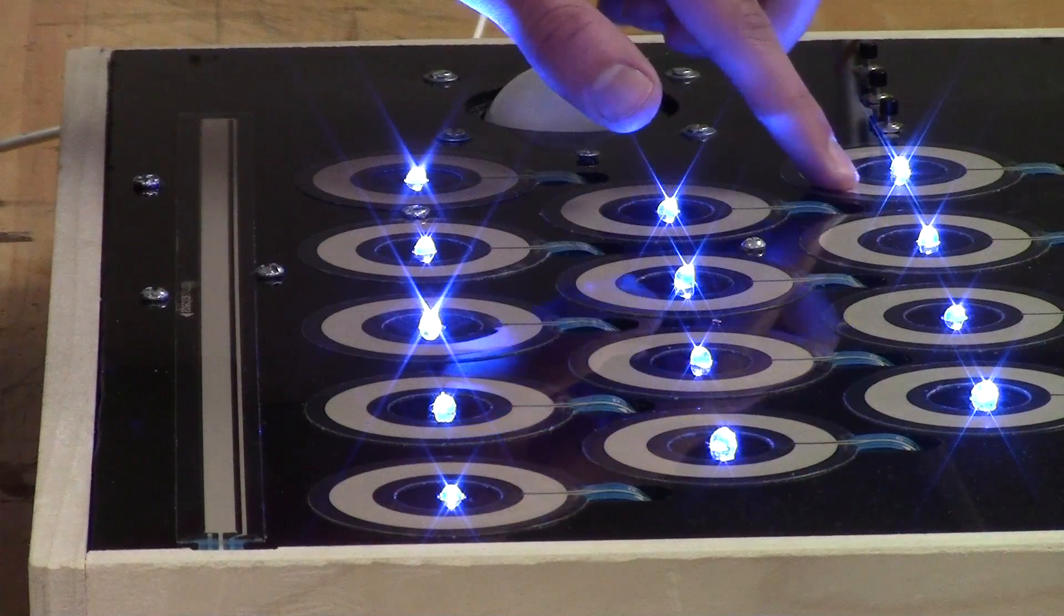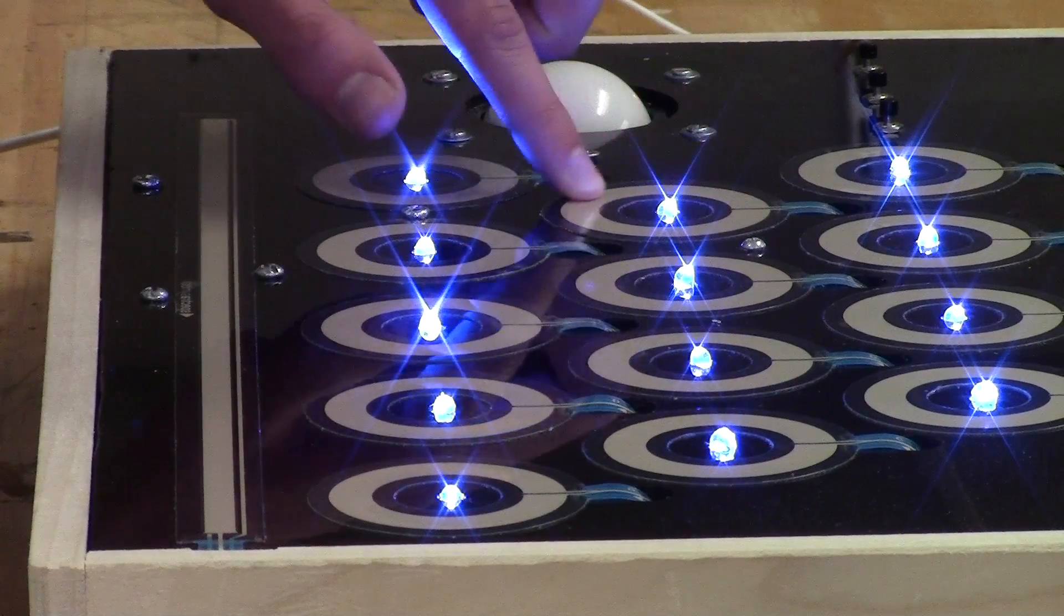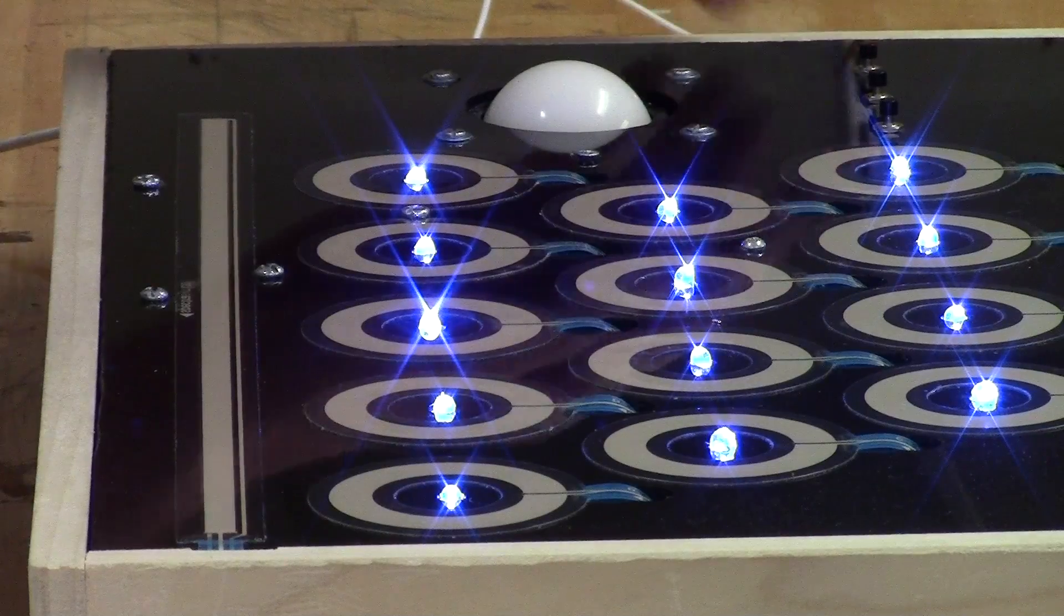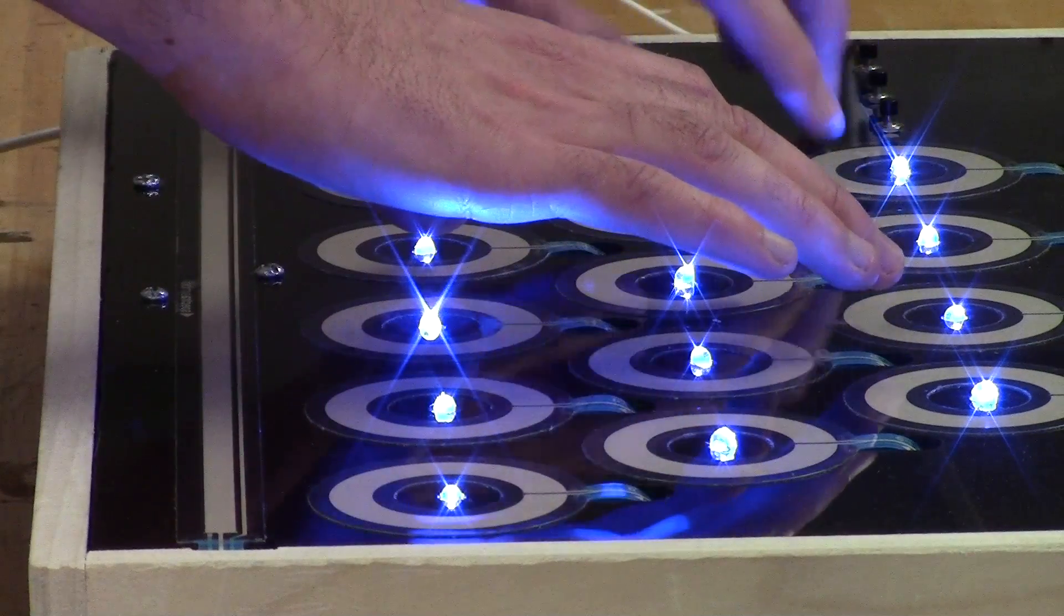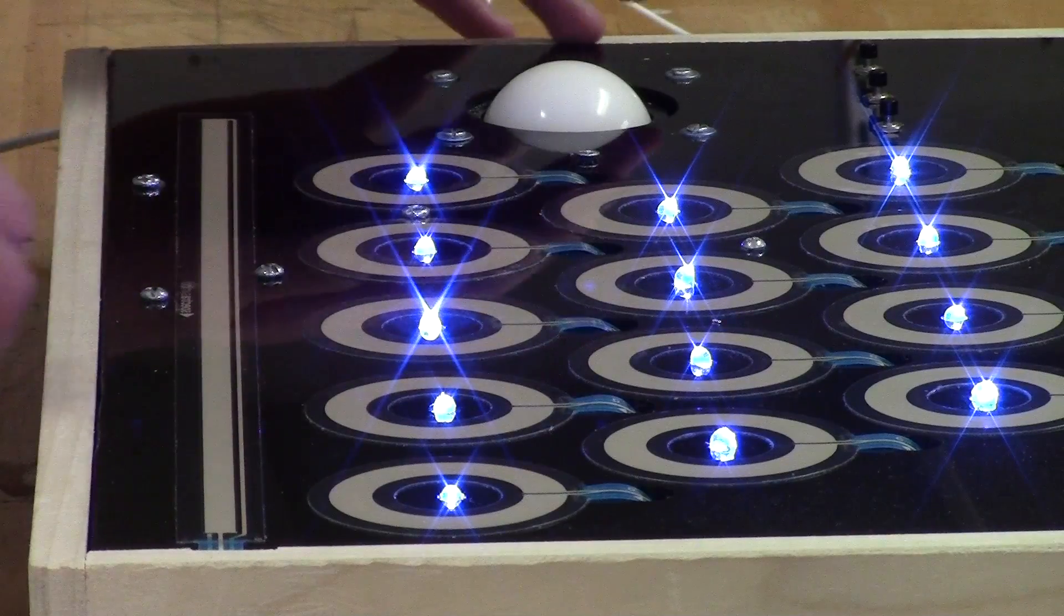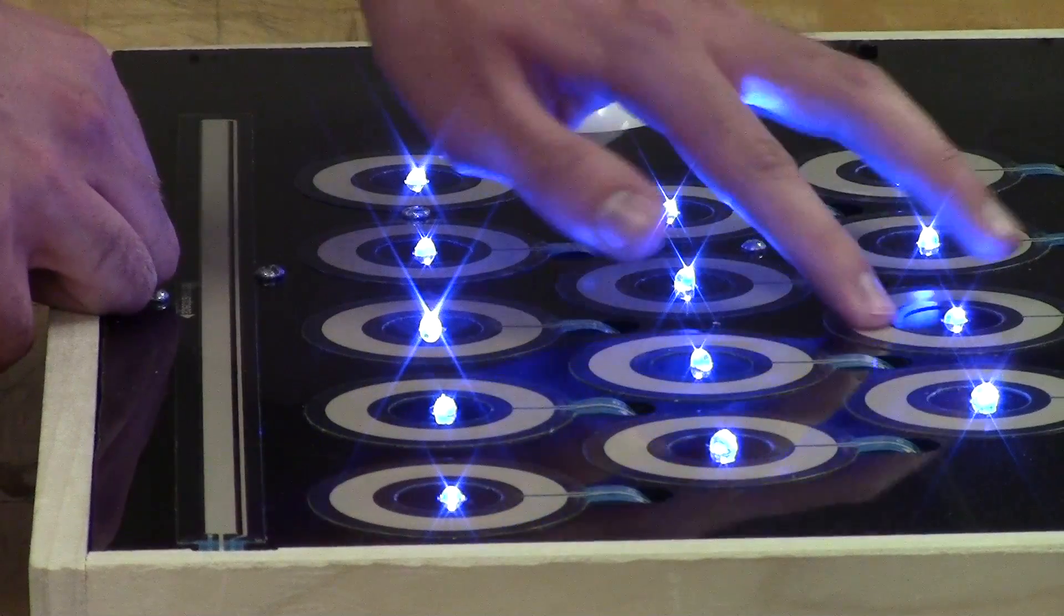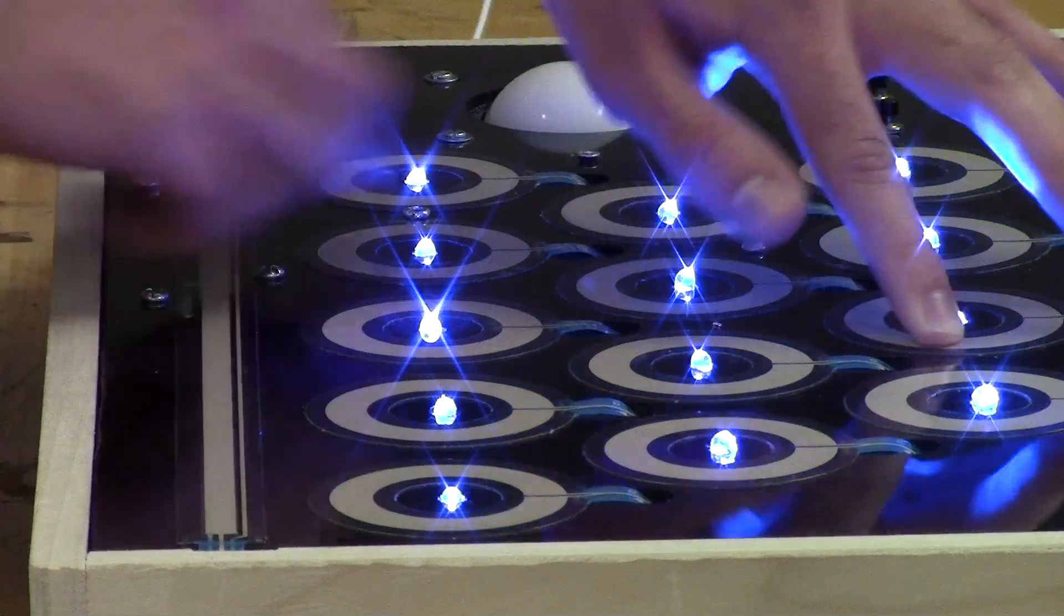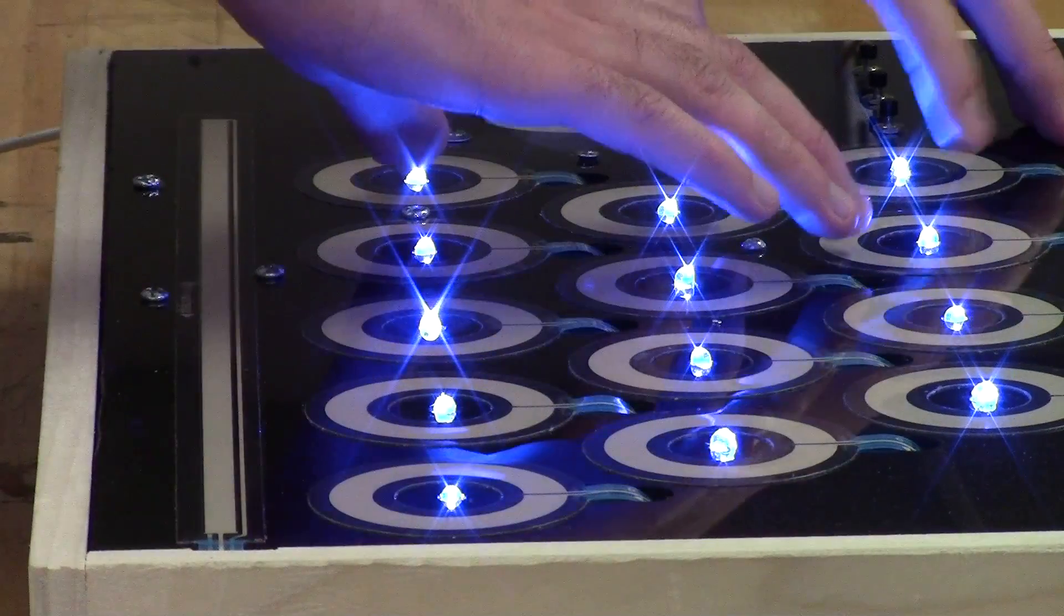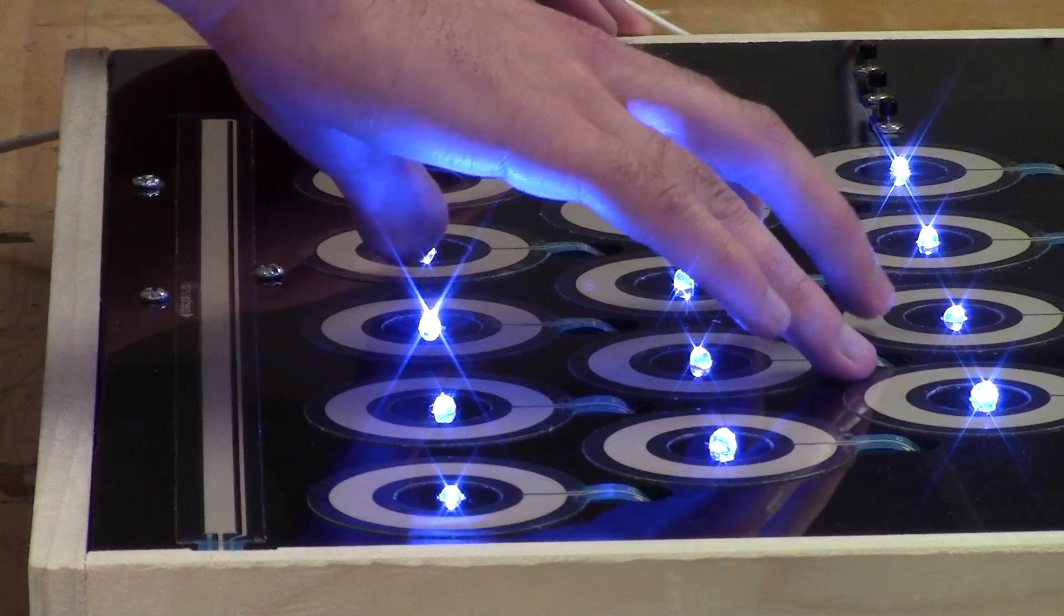we have each ring assigned to a different sample. So, we have drums, bass, and... Right in the front. Three of these are assigned to the verse, basically, the pre-chorus.